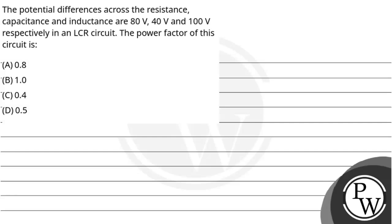Hello, let us see the question. The potential differences across the resistance, capacitor, and inductor are 80V, 40V, and 100V respectively in an LCR circuit. The power factor of this circuit is to be found.